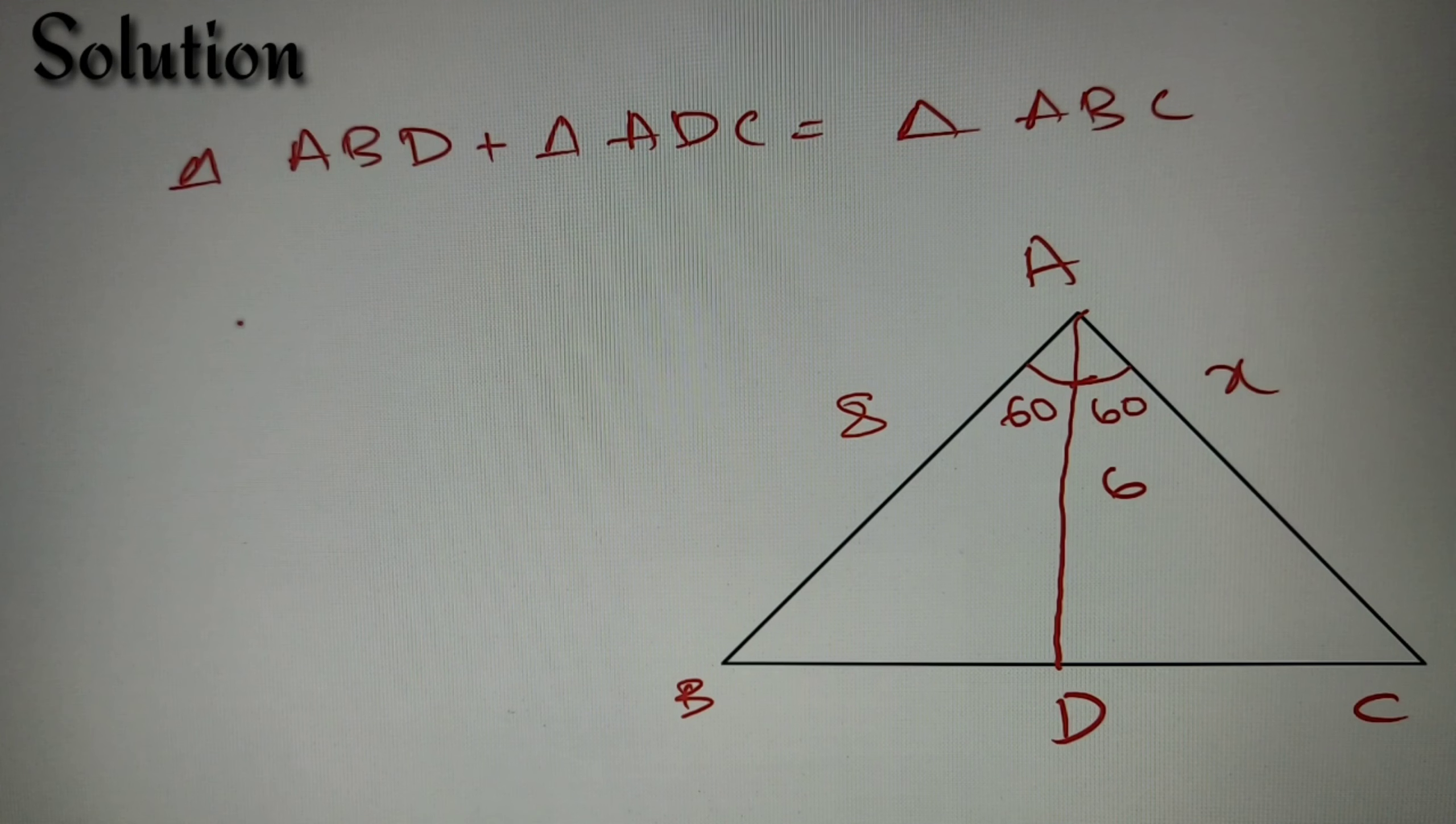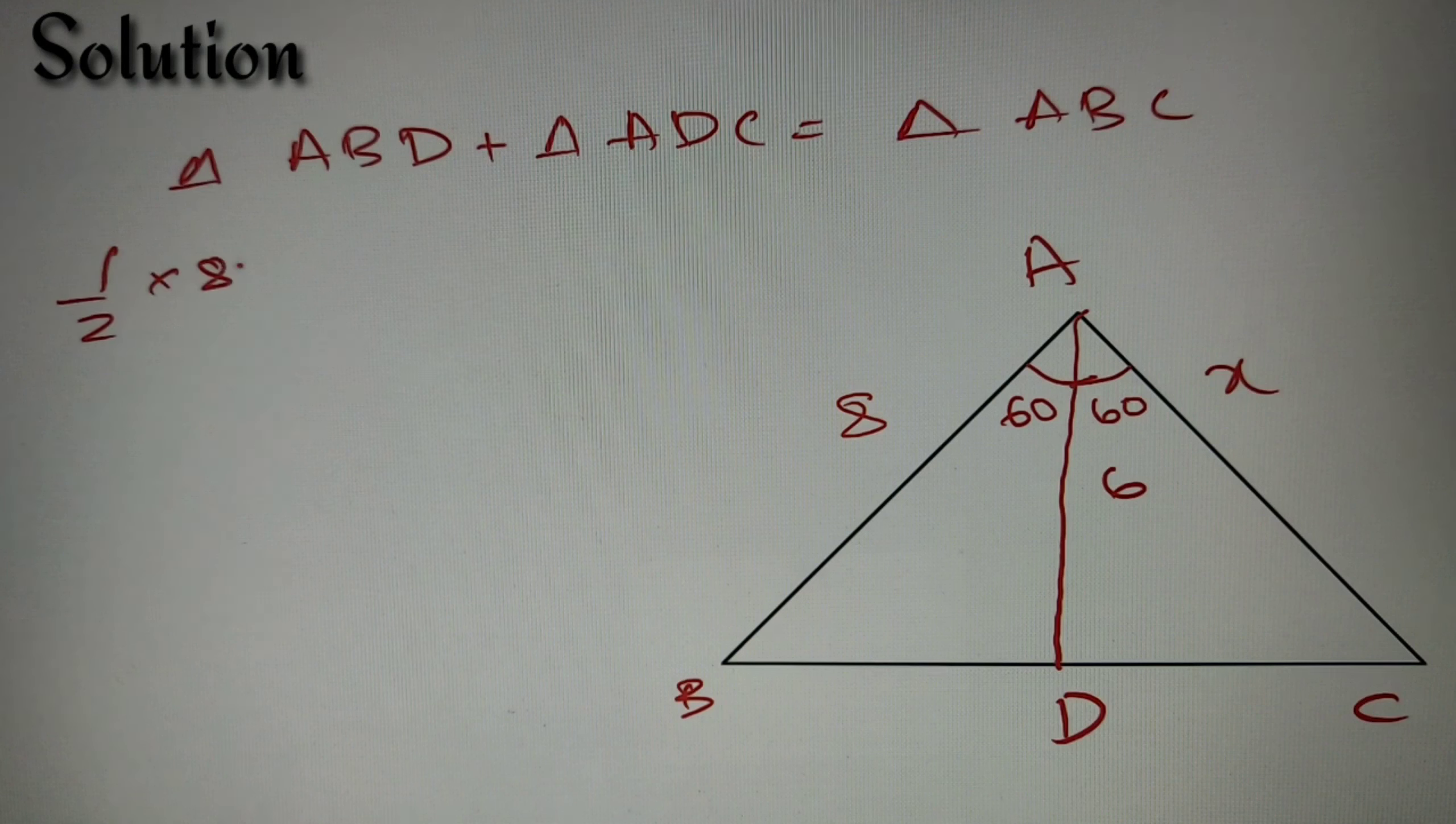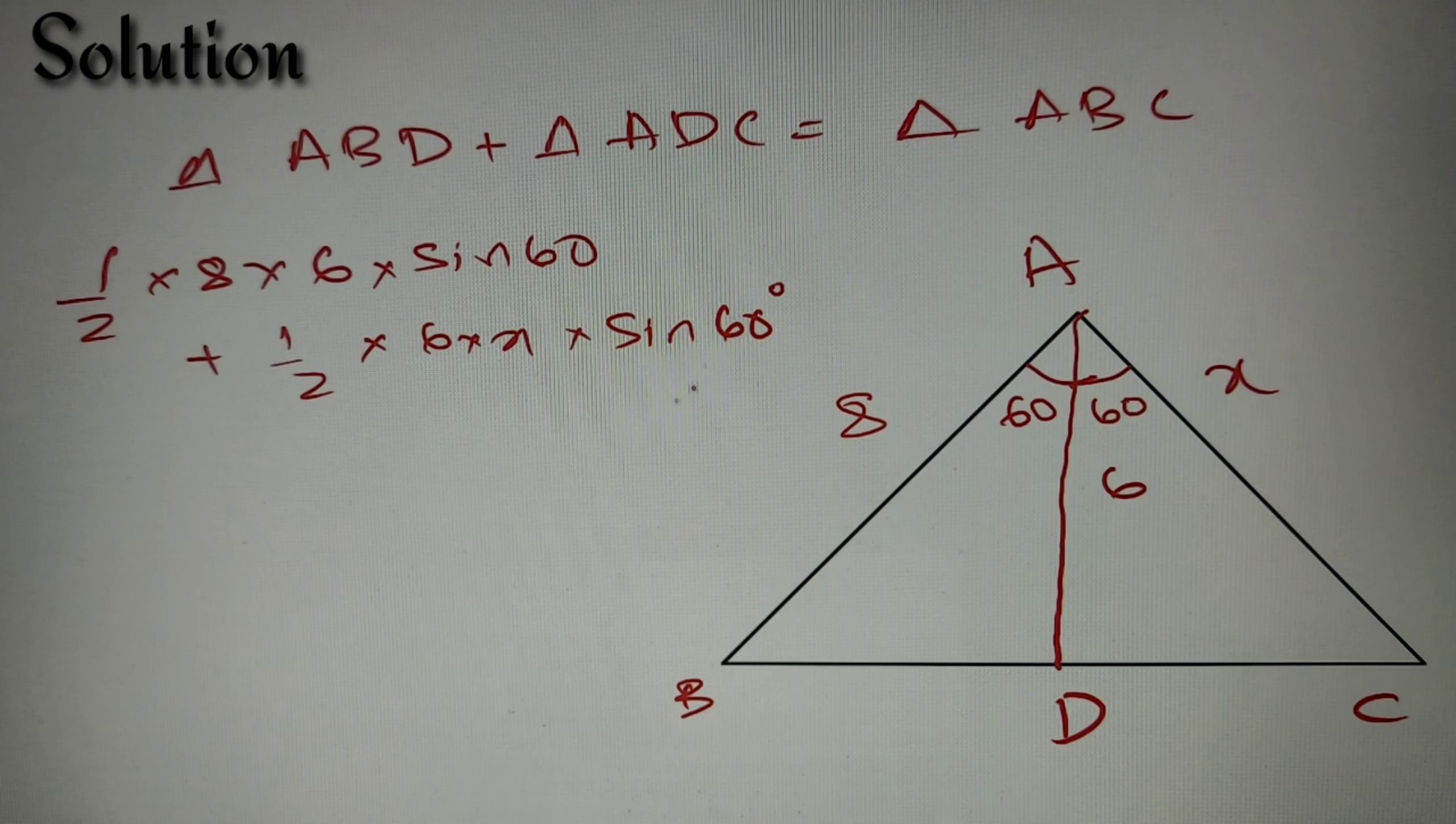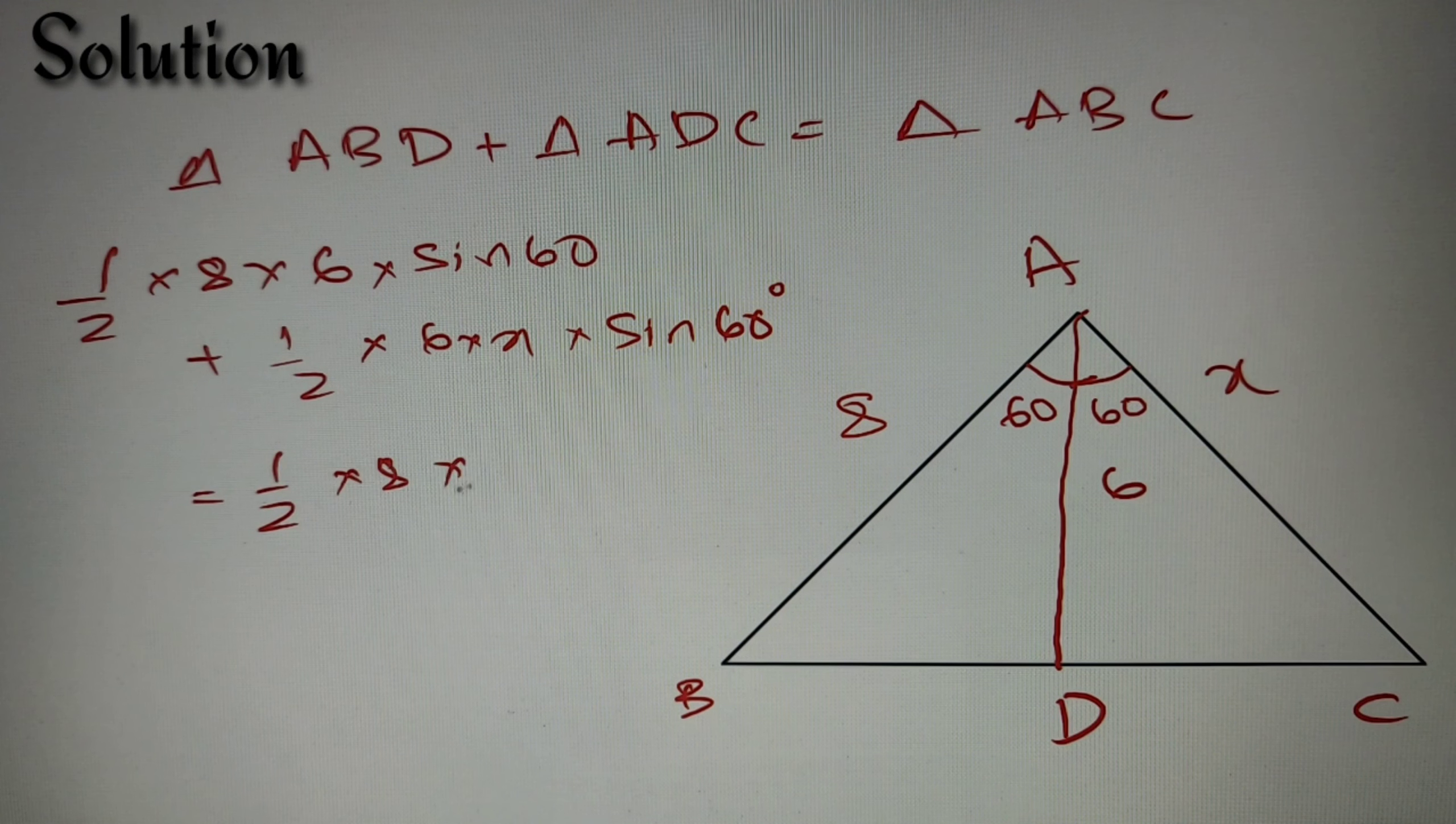Now let's find the area of triangle ABD according to the given formula: that is equal to half into 8 into 6 into sine 60 degrees, that is the angle between them, plus half into 6 into X, again the angle between them is equal to 60 degrees so we'll have sine 60 degrees, and lastly we'll have half into 8 into X into sine 120 degrees.